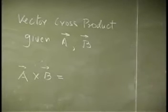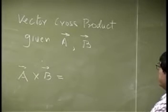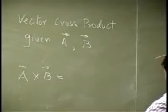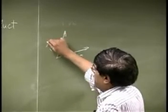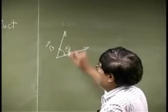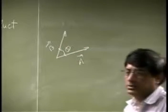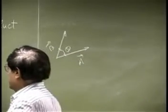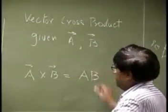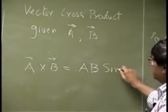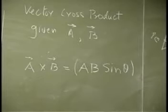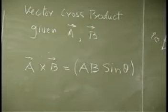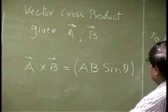So that's the product we need to define. For example, if I had vector A going in one direction and vector B going in another direction, and this angle was theta — so theta is the angle between vectors A and B — then this product is going to be A times B times sine theta. That's the magnitude: the product of the magnitudes of the two vectors multiplied by the sine of the angle between them.